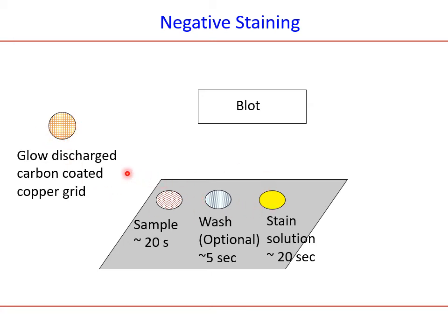Because the glow-discharged grid is like a magnet it is prone to attracting dust particles, so it must be protected between glow discharging and staining. The staining process uses three droplets of typically about 10 microliters each, spread on a parafilm. Since parafilm is hydrophobic, wells are made on the parafilm to hold the droplets. The first droplet contains your macromolecular sample, the second is a wash (optional, to remove unabsorbed sample), and the third is the stain molecule.